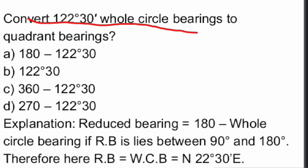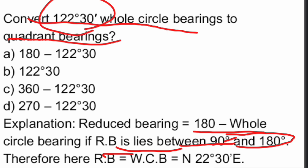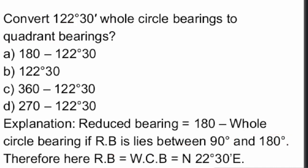Convert 122 degrees 30 minutes whole circle bearing to quadrant bearing. Here, RB = 180° − WCB, since the value lies between 90° and 180°. So RB = 180° − 122° 30' = 57° 30'. The answer is Option A.